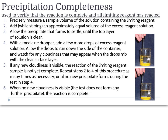When gravimetric analyses are done in a lab, they need to make sure the reaction is complete — meaning every last bit of the limiting reagent has actually reacted. We do this by a method called precipitation completeness. You precisely measure your sample volume containing the limiting reagent and stir while adding about an equal amount of excess reagent solution, allowing the reaction to happen and the precipitate to settle until the top of the solution is clear. Then with a medicine dropper, you add a little more excess reagent along the side of the container. If you see cloudiness, there is still limiting reagent reacting. If there is no cloudiness, your reaction is complete.